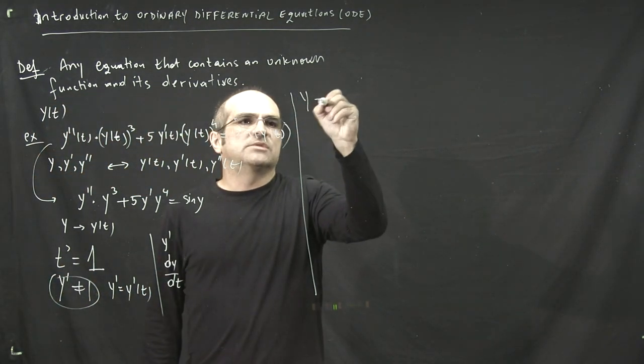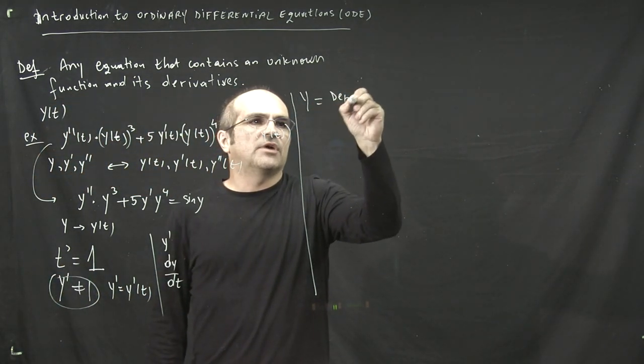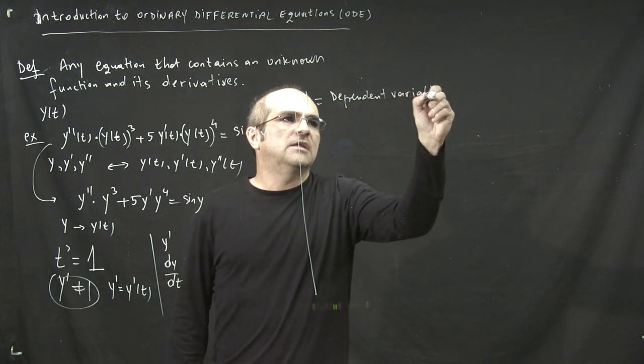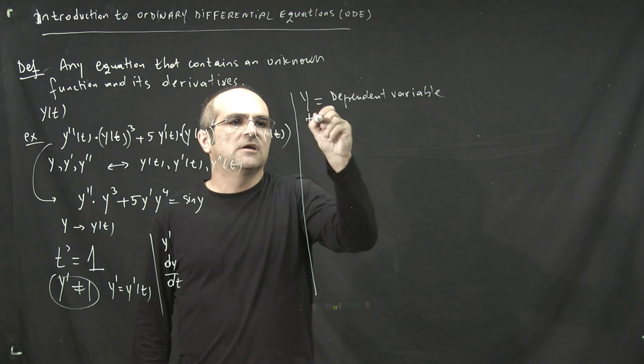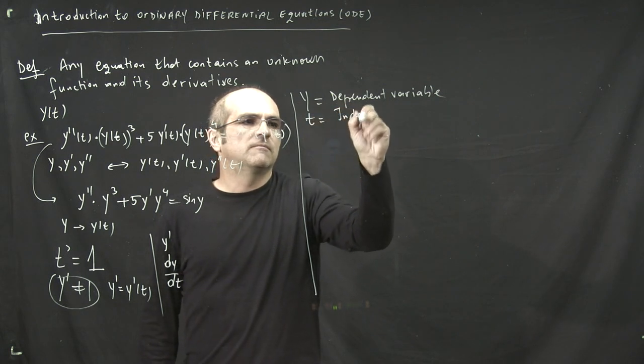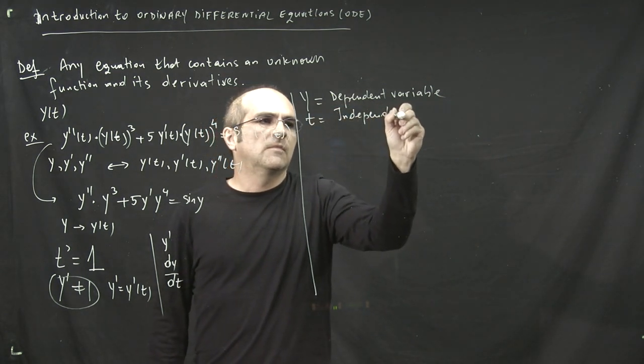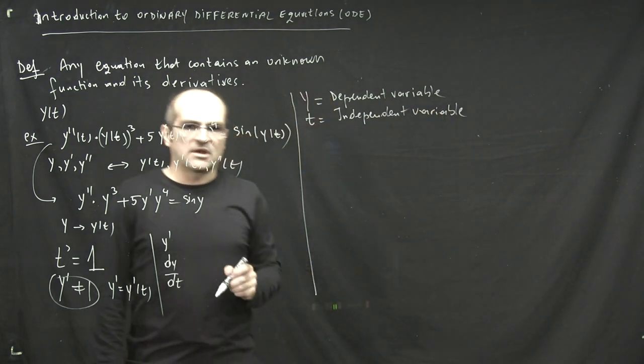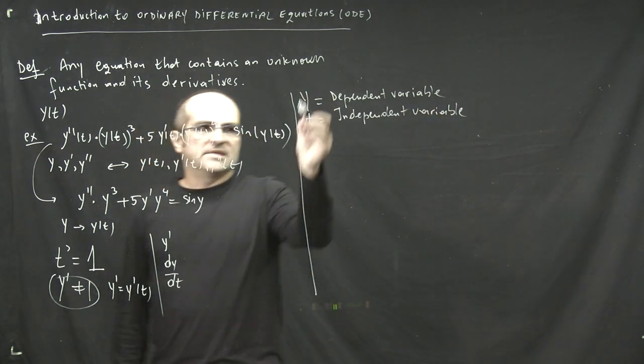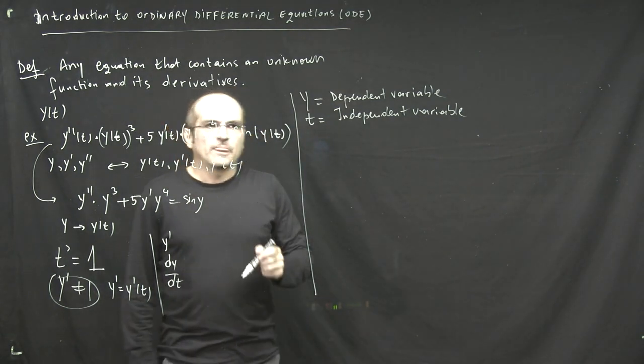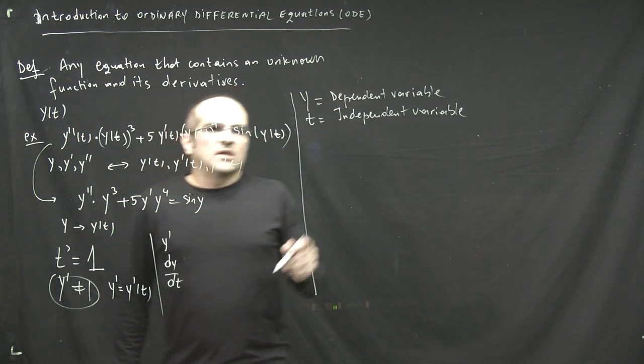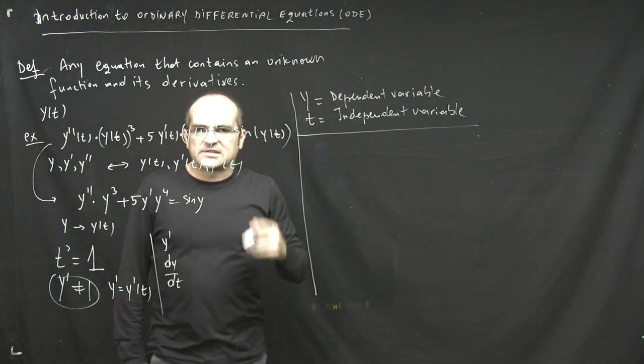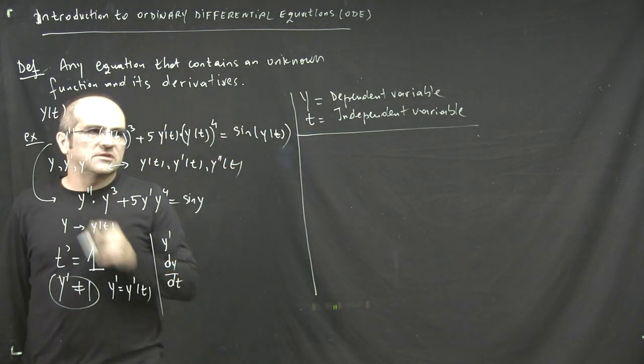As I mentioned in the notes, y is called the dependent variable, and t is the independent variable. So they are written as variables, they are called variables because they look like variables, although y is a function of t.